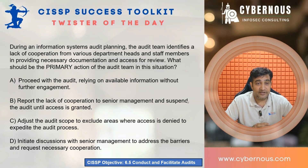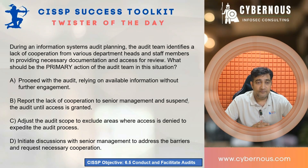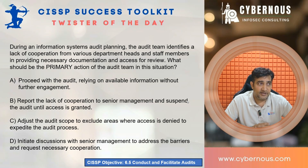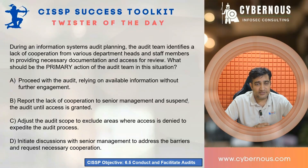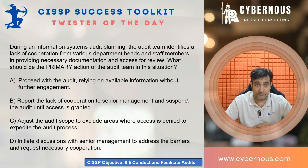This particular question has been pulled from CISSP Objective 6.5, which says 'conduct and facilitate audits.' The question is: during an information system audit planning, the audit team identifies a lack of cooperation from various department heads and staff members in providing necessary documentation and access for review. What should be the primary action of the audit team in this particular situation? Feel free to go through these options and take around one minute to answer.